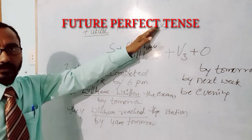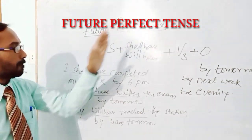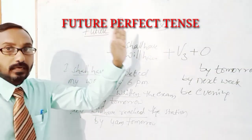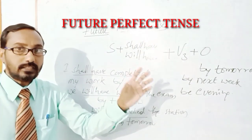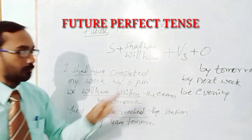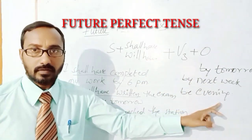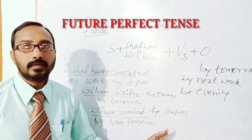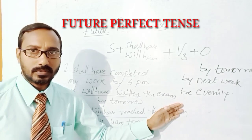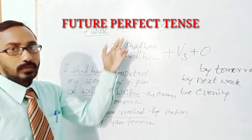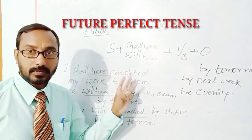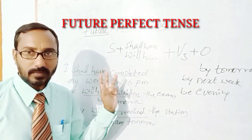The future perfect tense shows an action that will be completed by a certain time in the future — by tomorrow, by next week, by evening, by tomorrow morning, by two days, and likewise. These are the three tenses we discussed: present perfect, past perfect, and future perfect. Thank you.